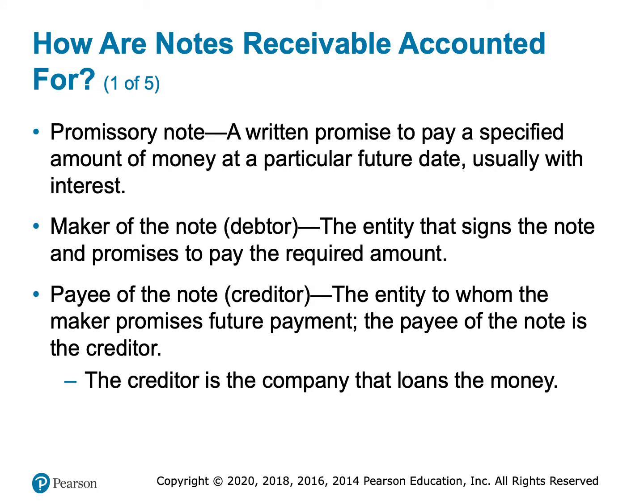We talked about this again earlier in objective one — a promissory note. Typically, that's a more formal written contract that specifies how much has to be paid back, what the interest associated is, and when it has to be paid back — what the maturity date is. The maker of the note is also called the debtor; this is the person that owes the money. The payee of the note, or the creditor, is the one who is receiving the payment — the one who loaned the money, the lender. So the maker or debtor is the borrower; the payee or creditor is the lender.